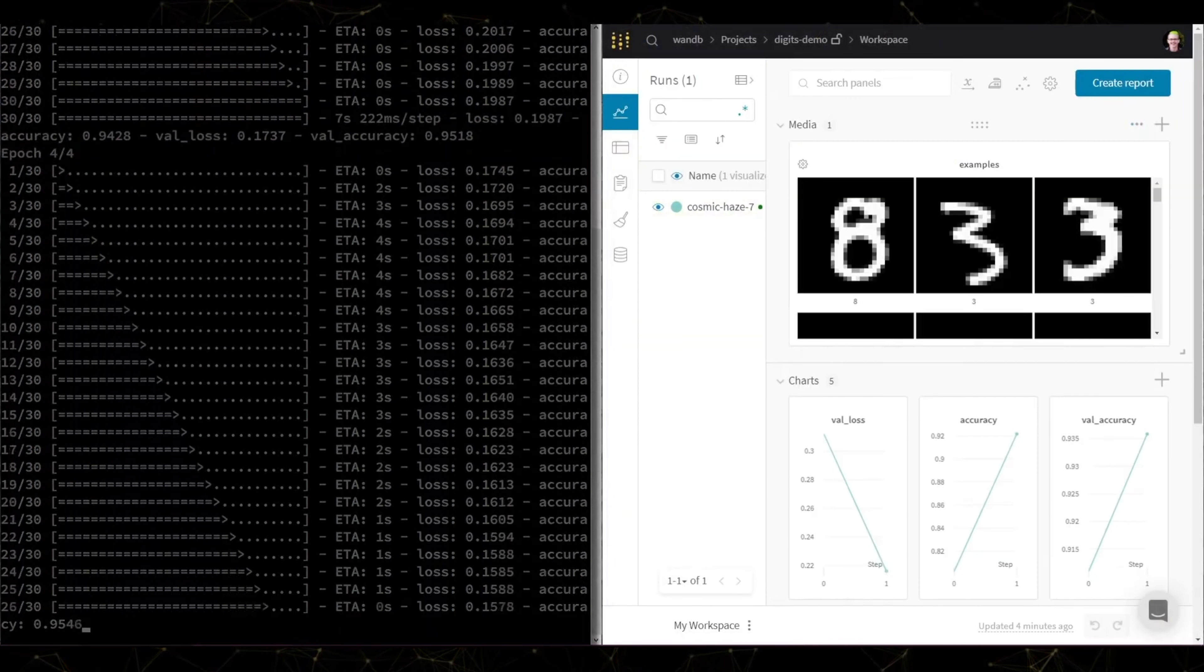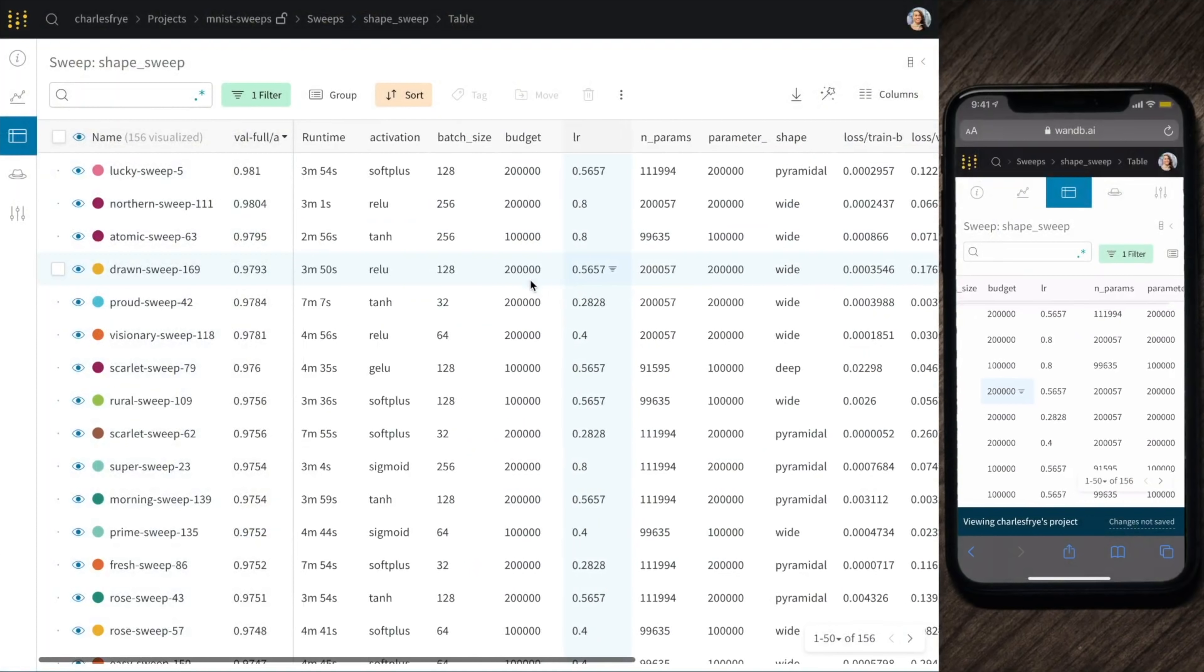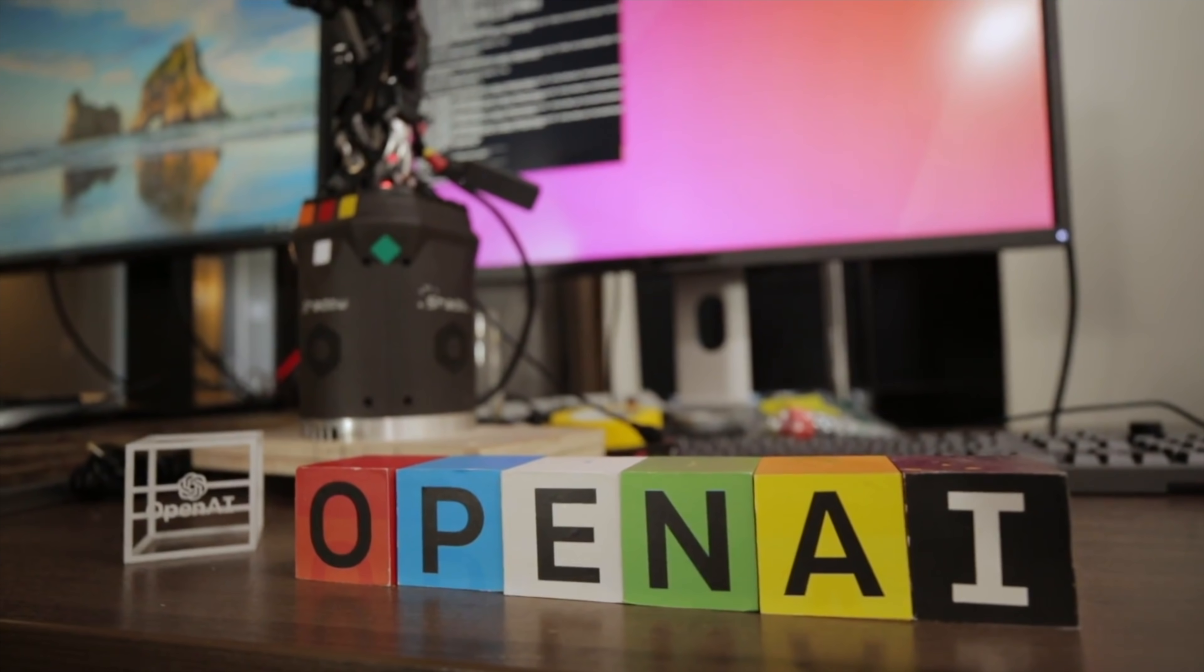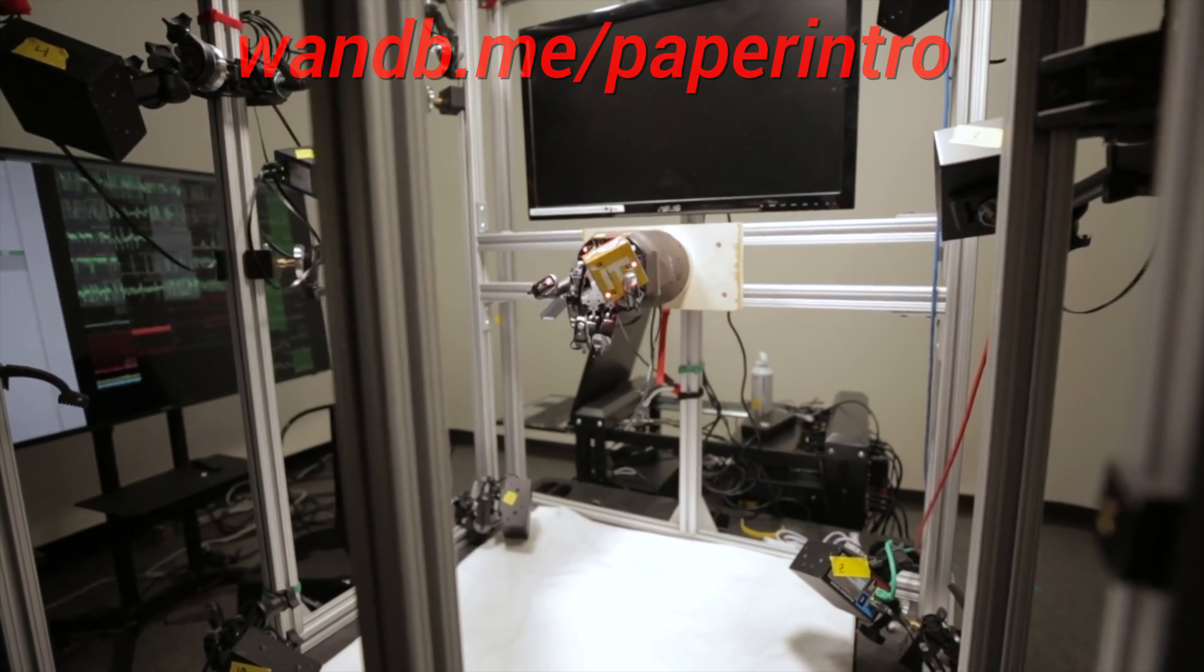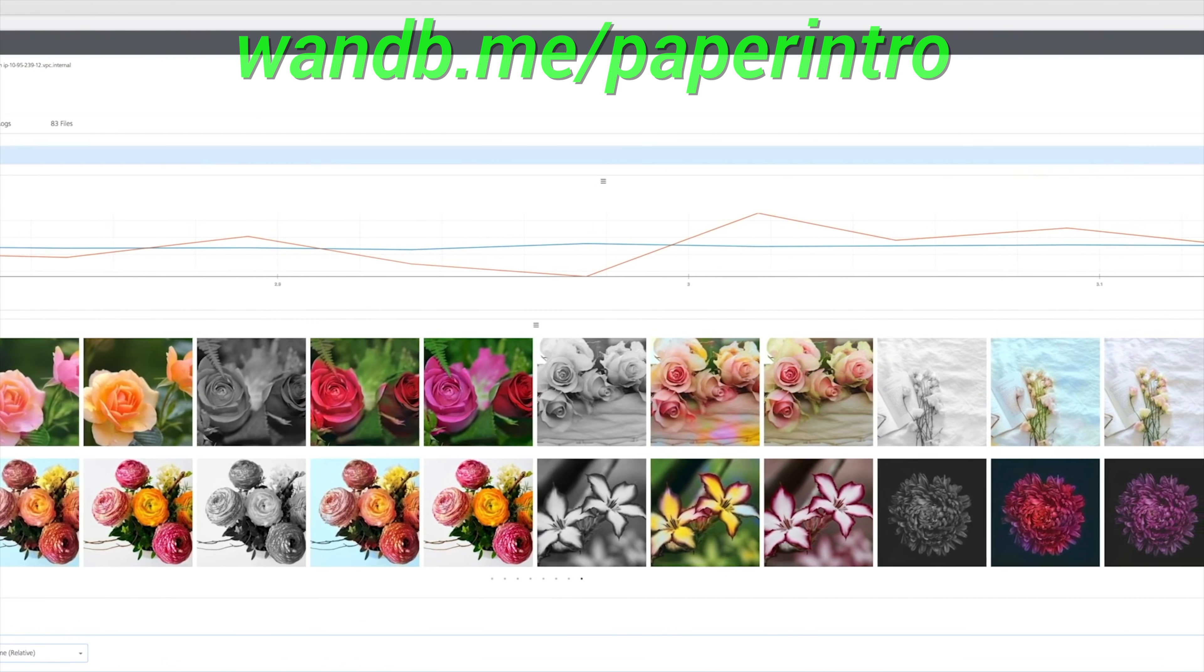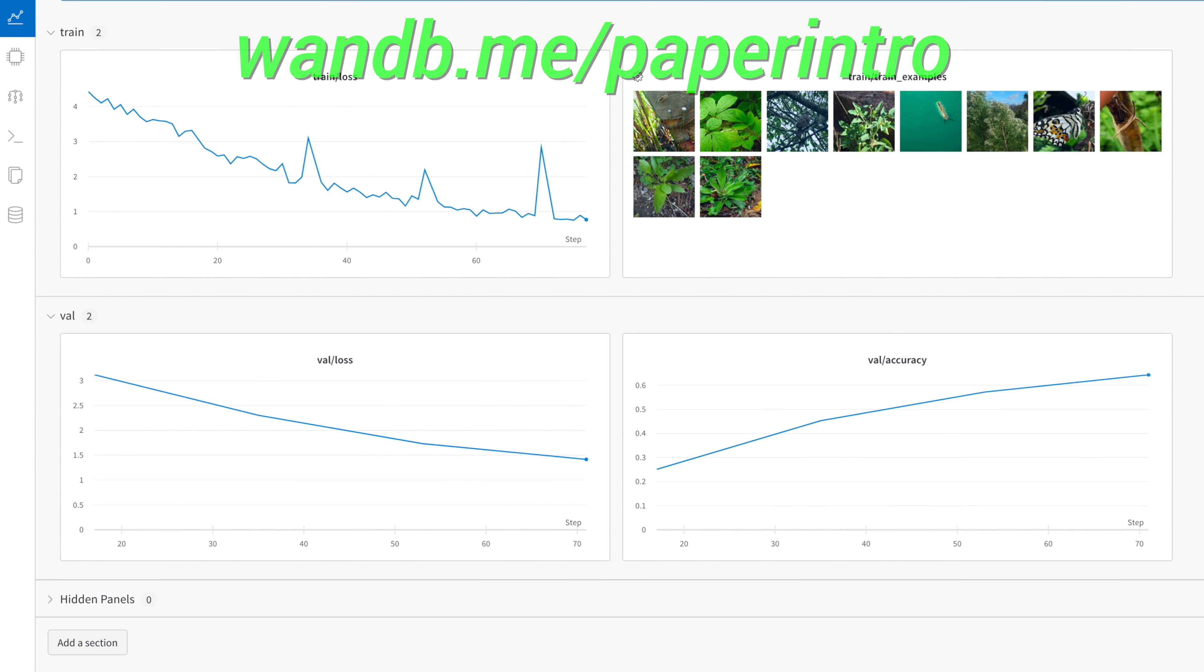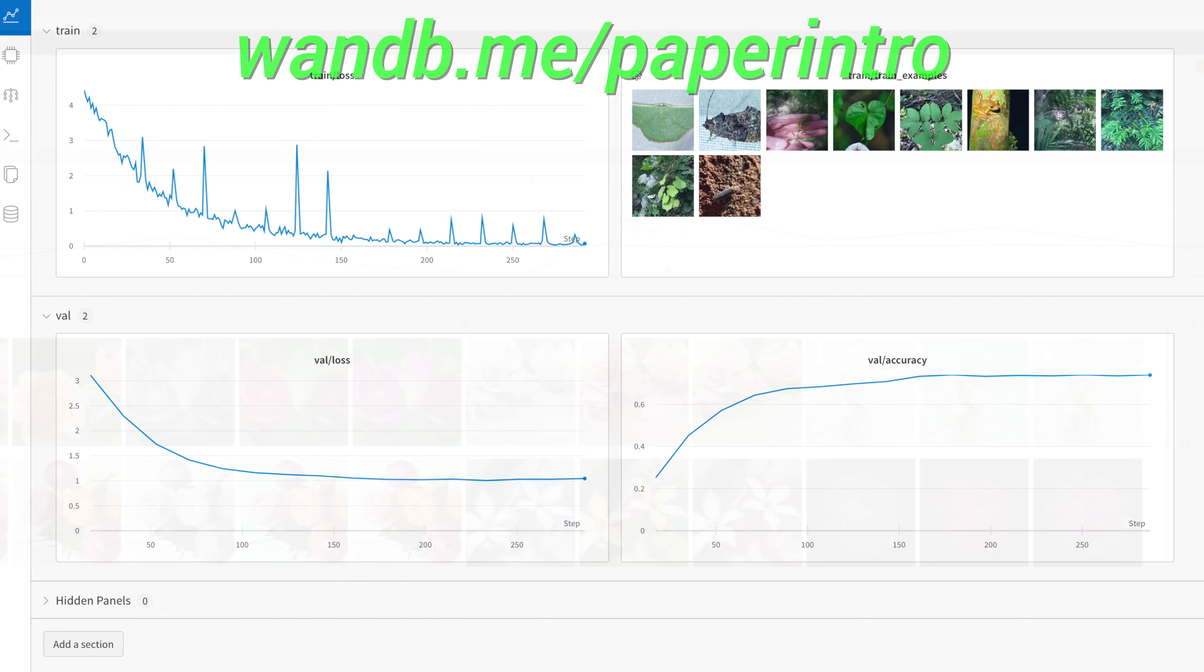They have tools for experiment tracking, dataset and model versioning, and even hyperparameter optimization. With Weights and Biases today, we will be able to experience the wonderful feeling of training a neural network and being in control of your experiments. After you try it, you won't want to go back.